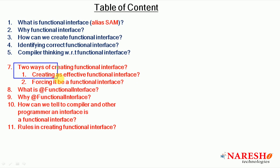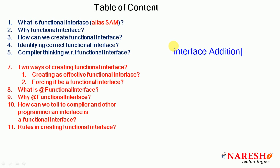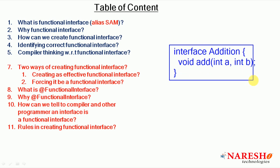The first point we need to understand is the two ways of creating a functional interface. The first way is creating a functional interface as effectively functional — that means you are not explicitly declaring the interface as a functional interface. You simply create a single abstract method interface, and then we call it an effectively functional interface.